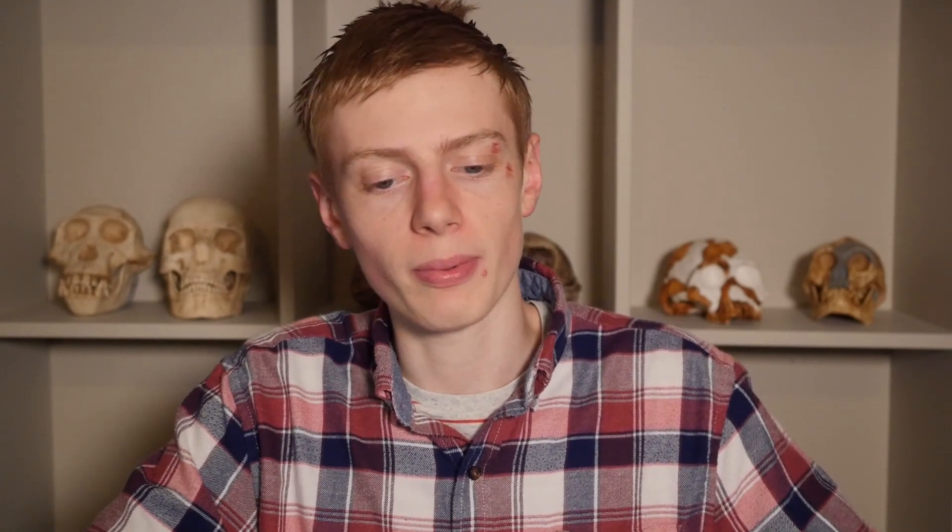I've got here the paper describing the lumbar vertebrae of Australopithecus sediba. The paper is by Williams et al., 2021, and it is named New Fossils of Australopithecus sediba reveal a nearly complete lower back. So, let's dive into this paper and learn what we can about these new vertebrae.